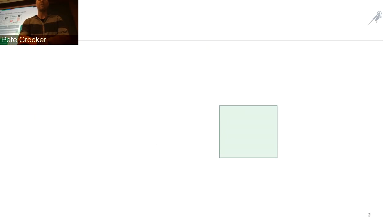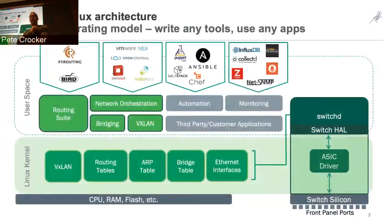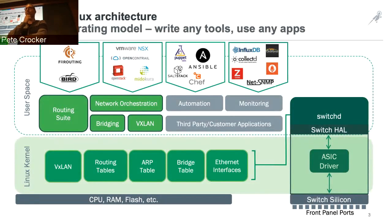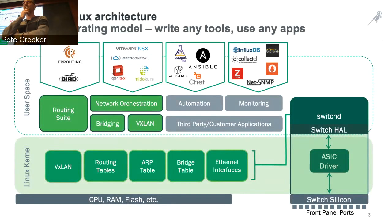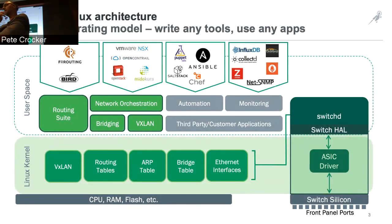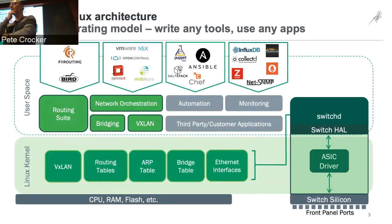What we're going to talk about is bringing network orchestration and automation together. Now oftentimes these two topics don't typically meld well together. Networking teams are often a bit reticent to move towards automation. I'm here essentially to talk about how this can be done both in baby steps and in more advanced cases of truly moving networks towards continuous integration and continuous deployment.